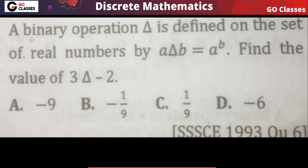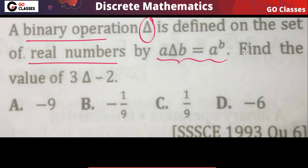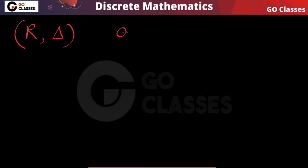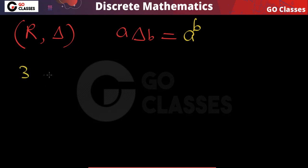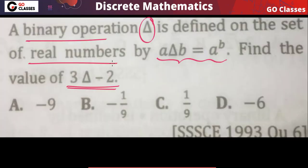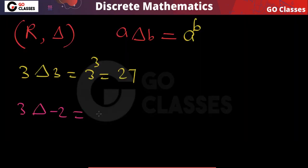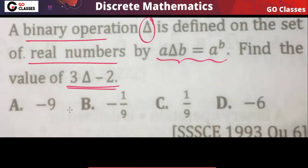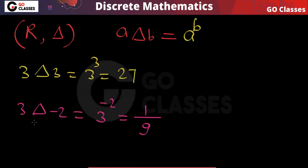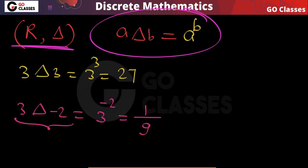Next question: a binary operation delta is defined on the set of real numbers as a Δ b = a^b. Find the value of 3 Δ (−2). From the definition, a Δ b = a^b, so 3 Δ (−2) = 3^(−2) = 1/9. So the answer is 1/9 — option C. This is essentially the exponentiation operation defined on the set of real numbers.